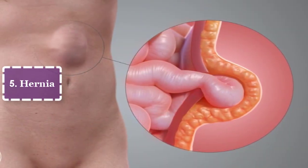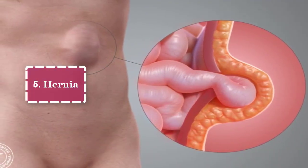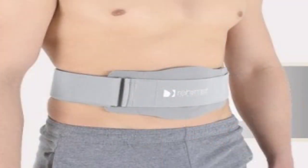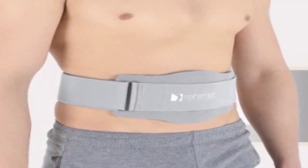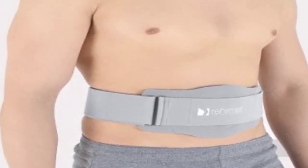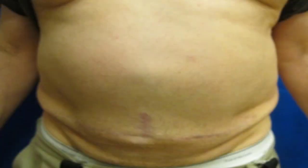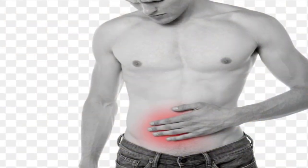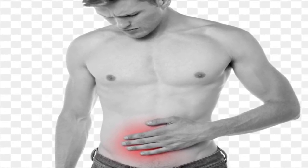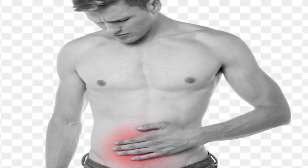5. Hernia — A hernia is the result of an internal organ or other body part pushing through the muscle or tissue surrounding it. A lump or bulge may appear with some hernias in the abdomen or groin. Other symptoms may include increasing size of the bulge, increasing pain at the site, pain when lifting, a dull ache, or a feeling of fullness. Different symptoms go along with each type of hernia — for example, hiatal hernias don't produce a bulge. Hernias may cause serious problems, so see your doctor if you suspect you may have one.